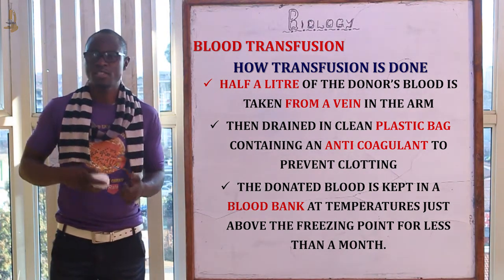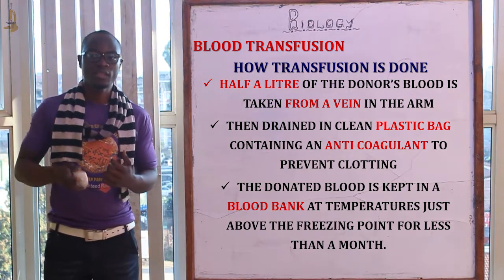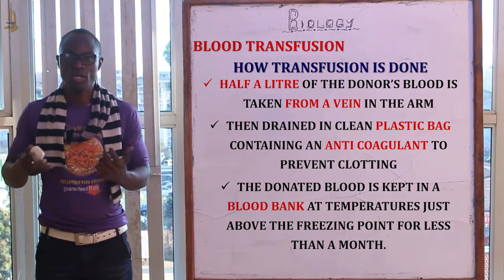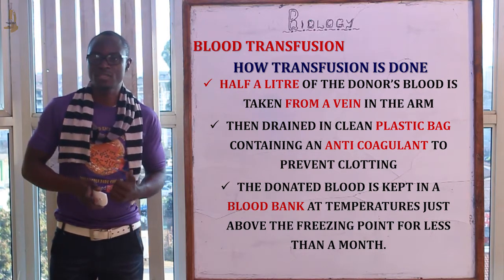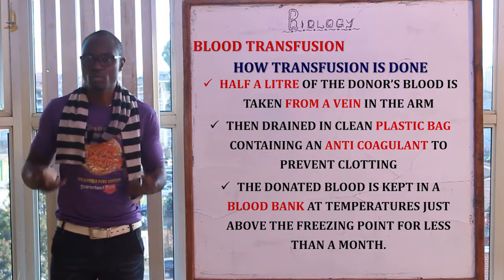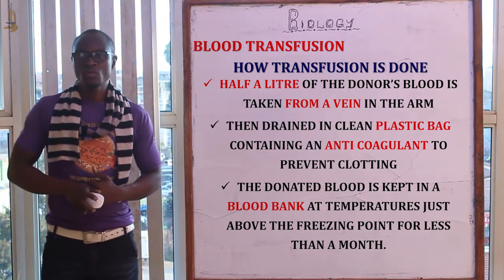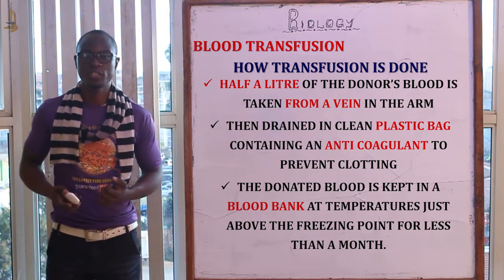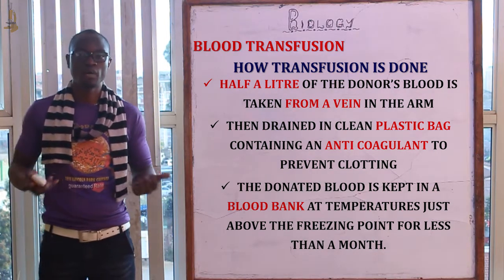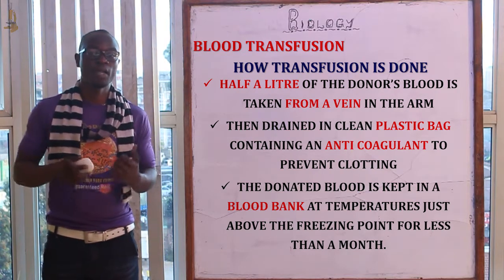The donated blood is kept in a blood bank at temperatures just above the freezing point for less than one month, because after a month most of the red blood cells would have died, making the transfusion less effective. The blood should also be screened for different pathogens, such as HIV, tuberculosis, and many others, before being received by the recipient.